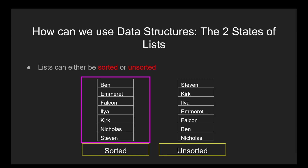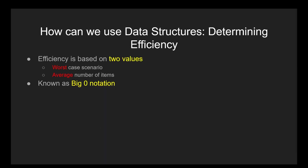Another thing to note is that we determine the efficiency of a searching algorithm based on both the worst-case scenario and the average number of items it must search. We call this Big O notation, which gives each searching algorithm an equation that takes in the size of the array as an integer n and outputs a worst-case scenario efficiency value we can use to compare against other searching algorithms. We can then also look at how long, on average, it takes to find an element in a list.